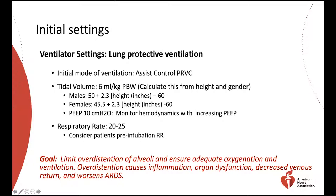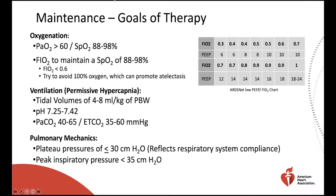Set your patient's respiratory rate to 20 to 25 breaths per minute, considering their pre-intubation respiratory rate as a guide. Reasonable oxygenation goals include a PaO2 greater than 60 and oxygen saturation greater than 88%. Increasing inspired oxygen concentration and PEEP levels can improve oxygenation. The ARDS network chart can guide titration of these parameters.